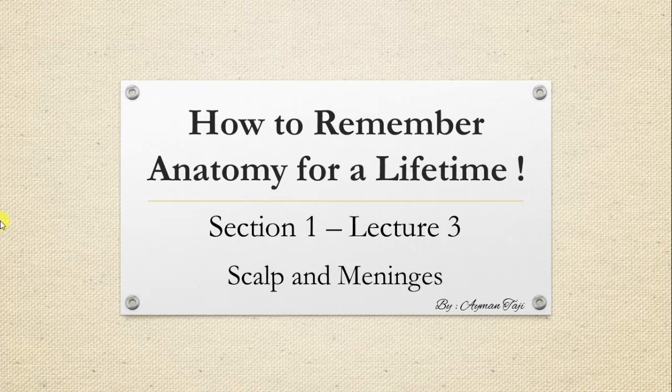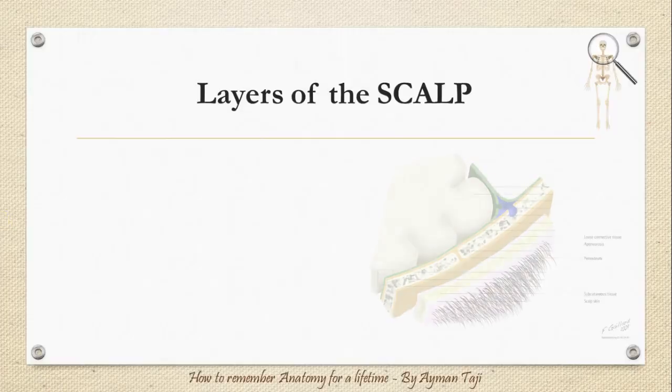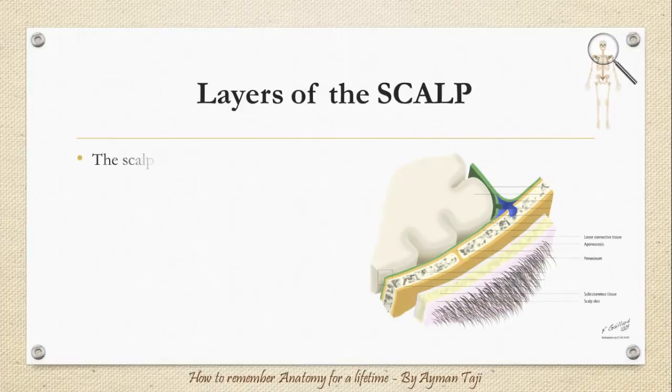Welcome to the third lecture of this section. Today we'll talk about scalp and meninges anatomy mnemonics, so let's get started. The scalp is composed of five layers which can be remembered with the word 'scalp' itself.